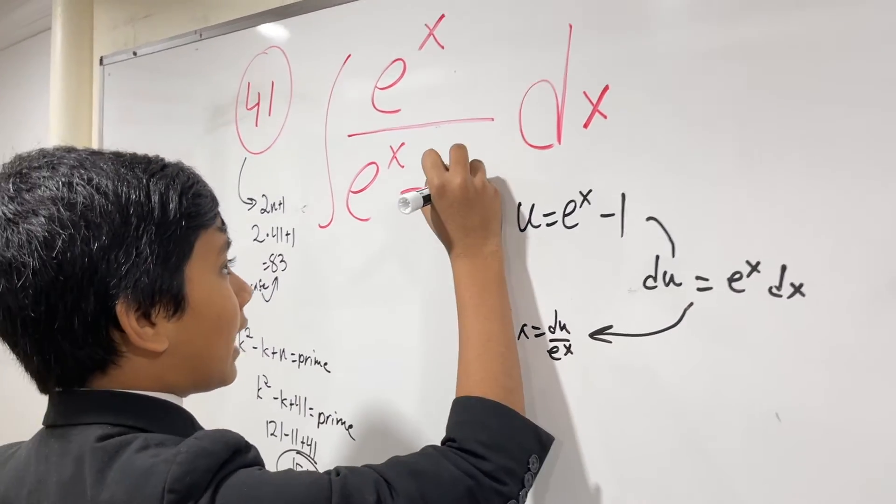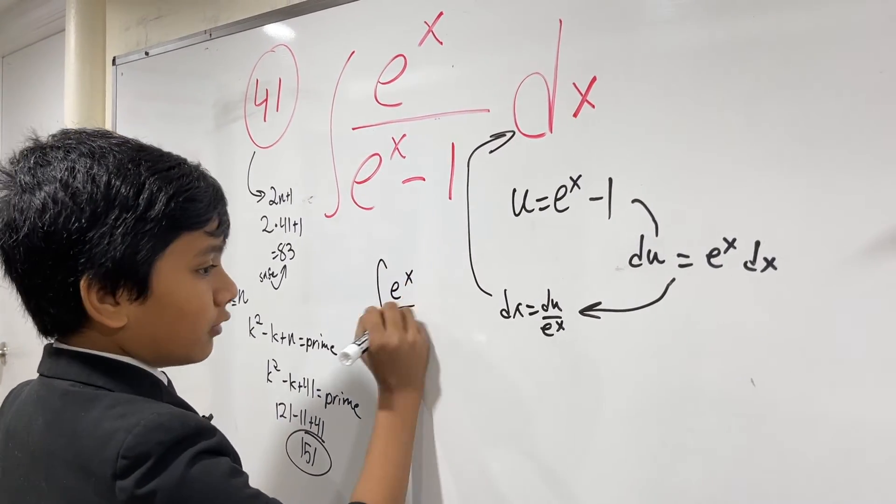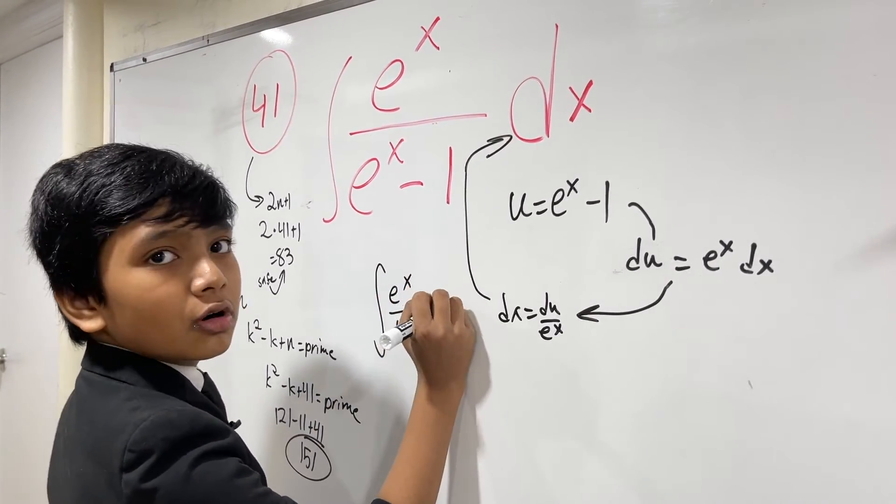We pull that straight in there, we get the integral e to the x over u times du over e to the x.